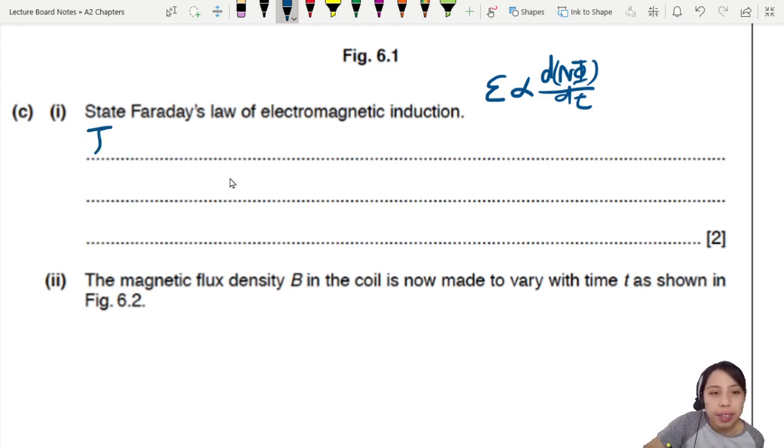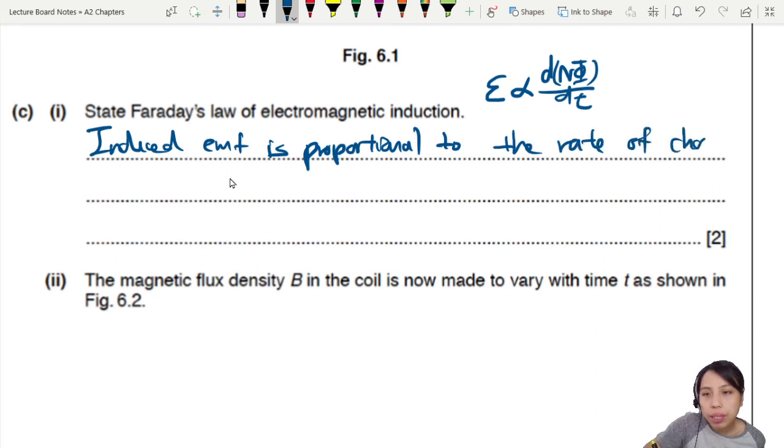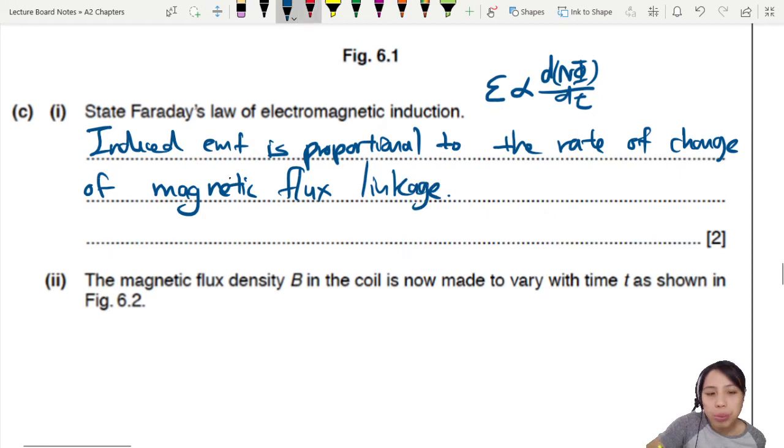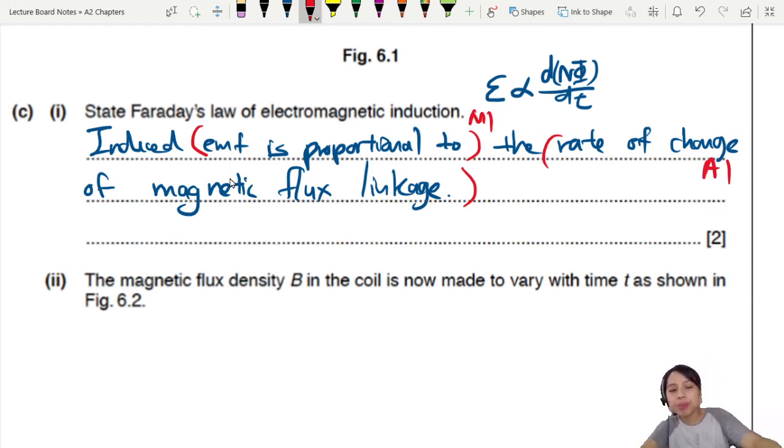So if you ever forget, remember the main idea is EMF induced is proportional to the rate of change of magnetic flux linkage. N phi is the magnetic flux linkage. D N phi Dt means the rate of change of that function phi. So we're going to say the induced EMF is proportional to the rate of change of magnetic flux linkage. Two marks.